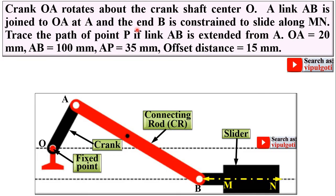Now look at the description and try to understand with the help of this figure. Crank OA rotates about the crankshaft center O. A link AB is joined to OA at A, and the end B is constrained to slide along MN. Trace the path of point P if link AB is extended from A.